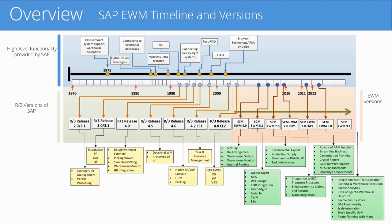Now let's take a look at the bottom of the chart. If you look on the left side, with R3 release 2.0, storage unit management and parallel processing was introduced. In release 3.0 and 3.1, there was integration with production planning and quality management. In release 4.0, picking waves was introduced, and there was also integration with the human resources module.